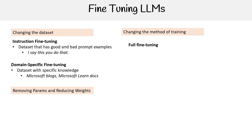Then we have changing the method of training. We have full fine tuning — this is where all the model's weights are updated, and it's expensive. Think of it as traditional fine tuning: you take the existing model's weights after the base tune as the starting point and run it through the training process again. You can combine these approaches — you can do full fine tuning and change the data set together, or do them separately.